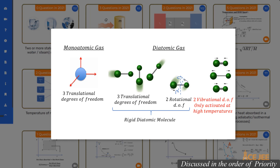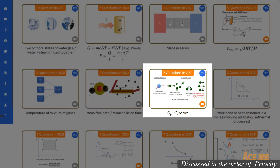Degrees of freedom for monatomic gas are 3. For diatomic gas at room temperature, they are 3 plus 2, that is 3 translational and 2 rotational degrees of freedom. For polyatomic gas, it is 3 translational, 3 rotational, and 2 times the number of vibrational modes. Note that for diatomic gas at high temperatures, vibrational modes get activated, in which case the number of degrees of freedom will be 3 plus 2 plus 2 times the number of vibrational modes.